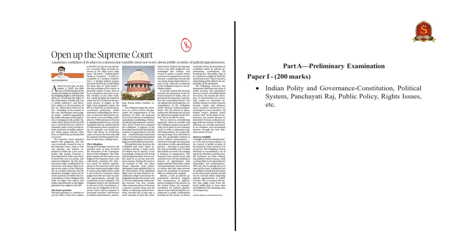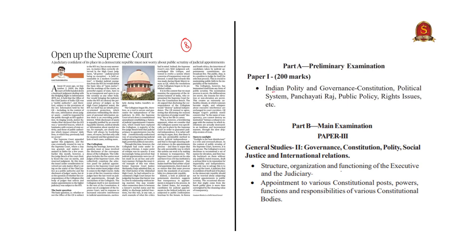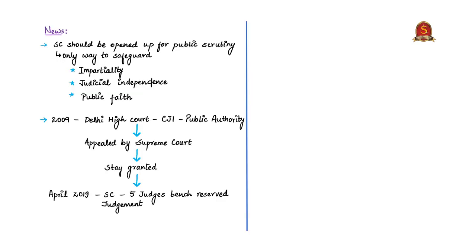This article appears on page number 8 in both the editions. It is important from both prelims and mains point of view, covered under Indian polity and governance in the preliminary examination, and under structure, organisation and functioning of the judiciary and appointment of various constitutional bodies for GS2 mains. In 2009, Delhi High Court held that the Office of Chief Justice of India was a public authority under the Right to Information Act 2005, meaning information held by the CJI could be requested through an RTI application. This judgment was appealed by the Supreme Court, which granted a stay. This month, the case came before a five-judge bench and the court has reserved judgment.